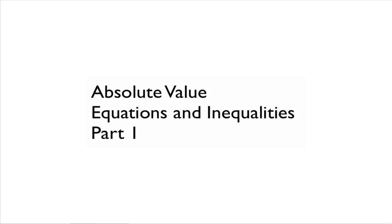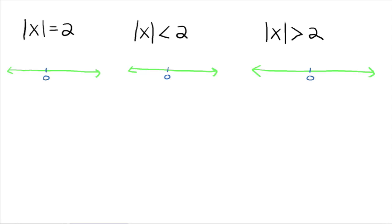So now we're going to solve absolute value equations and inequalities. To begin with, let's make sure we understand the concept. Everybody remember what absolute value means: the absolute value of a number means the distance that a number is from zero on the number line. So on our first equation, we have the absolute value of x is equal to 2. This equation is asking us to find values we can plug in for x so that when we take the absolute value of it, we get 2. So we're looking for numbers on the number line whose distance from zero is 2.